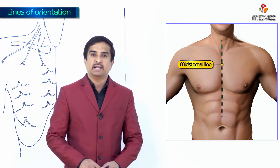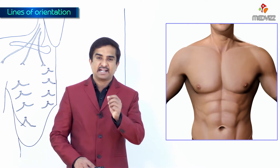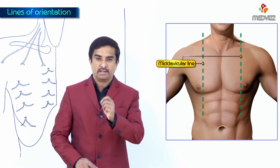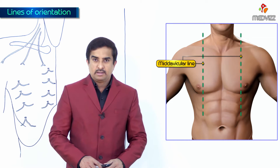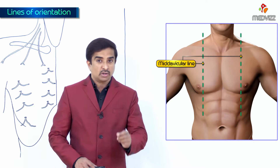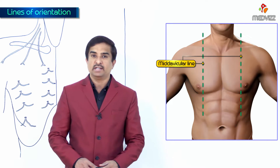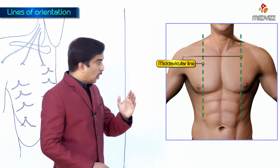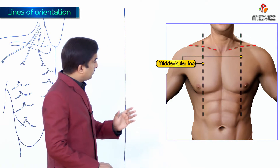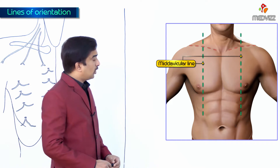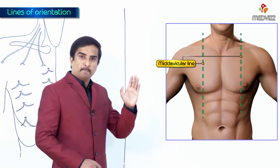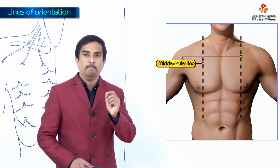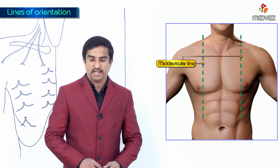After the mid-sternal line, the second one is called the mid-clavicular line. This mid-clavicular line is also a vertical line — it runs vertically downwards from the midpoint of the clavicle to the mid-inguinal point. This is called the mid-clavicular line.